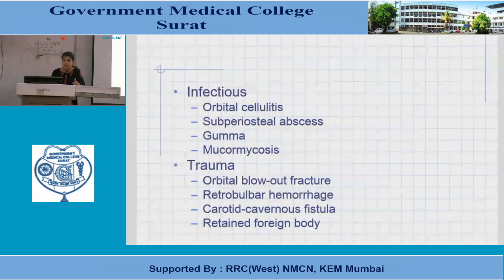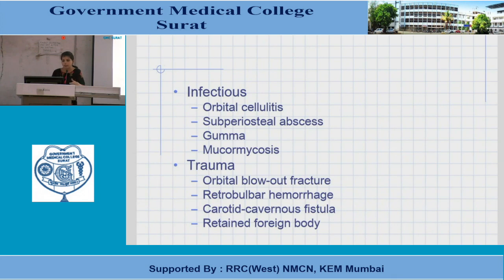In infectious etiology, there is orbital cellulitis. If it involves structures behind the orbital septum, it becomes a subperiosteal abscess if there is abscess formation in the orbital spaces. Traumatic causes include blowout fracture, retrobulbar hemorrhage, and carotid cavernous fistula.